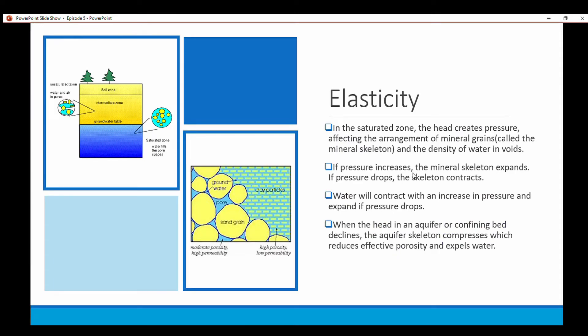Elasticity. In the saturated zone the head creates pressure which affects the arrangement of mineral grains, called the mineral skeleton, and the density of water in the voids. If the pressure increases the mineral skeleton expands and if the pressure drops the skeleton contracts. Water will contract with an increase in pressure and will expand if the pressure drops. When the head in an aquifer or confining bed declines, the aquifer skeleton compresses which reduces the porosity and expels the water.